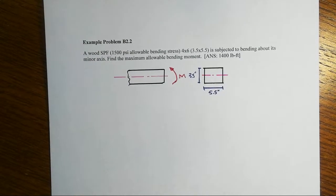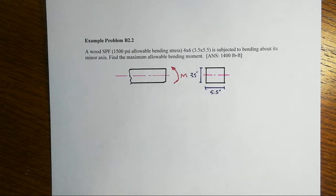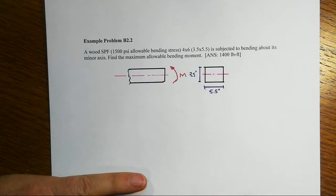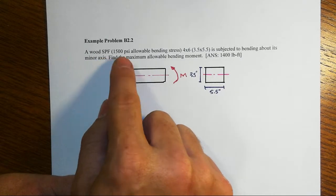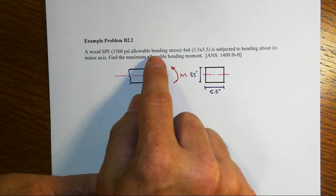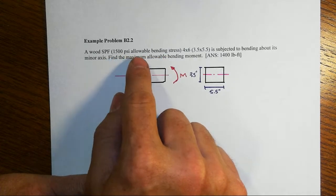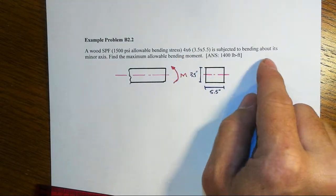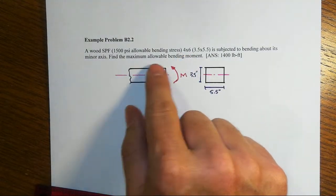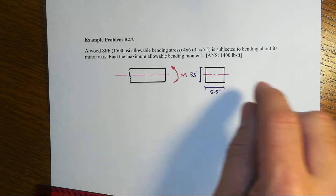In this next example of applying the basic bending stress model, we're given a wood cross-section, SPF stands for spruce pine fir, with a 1500 psi allowable bending stress. It is a 4x6 timber subjected to bending about its minor axis. Find the maximum allowable bending moment.